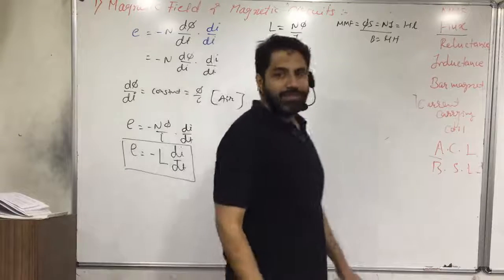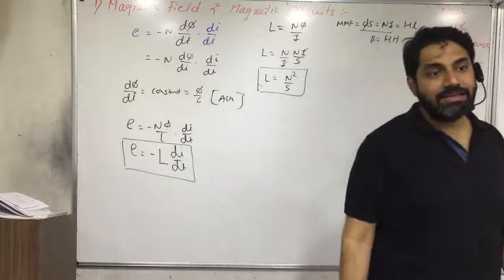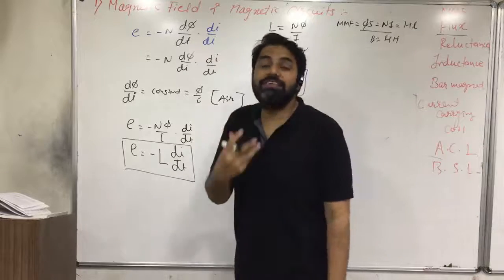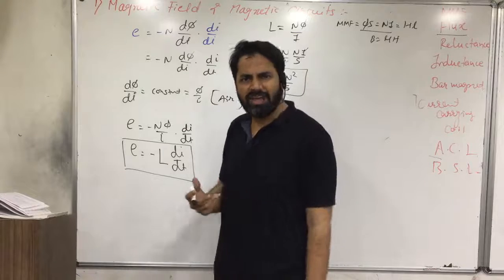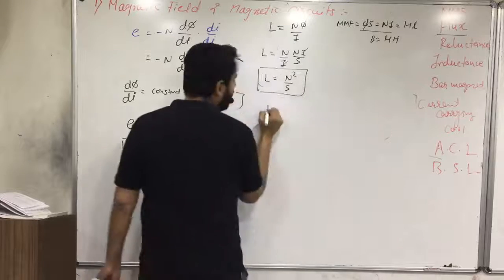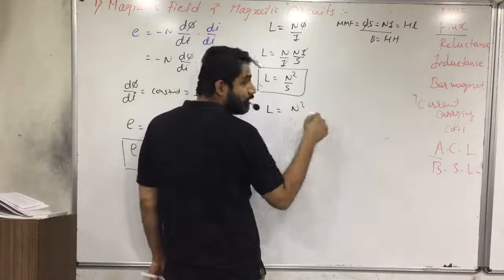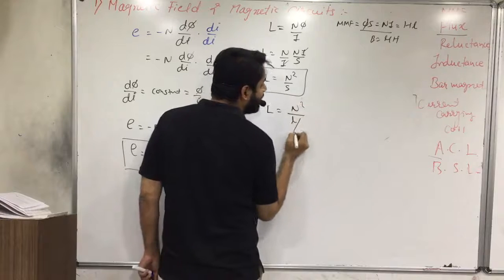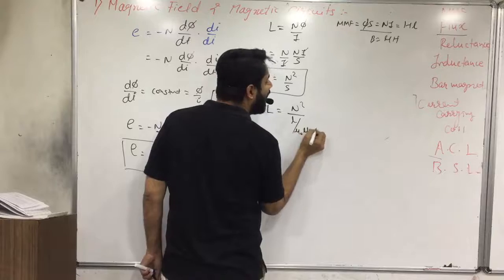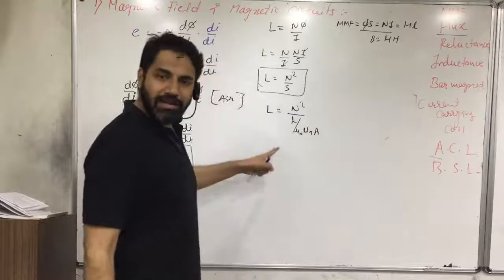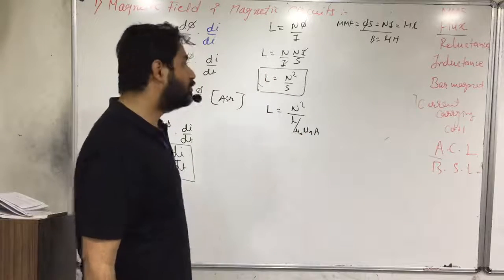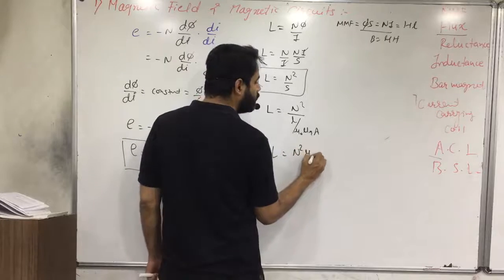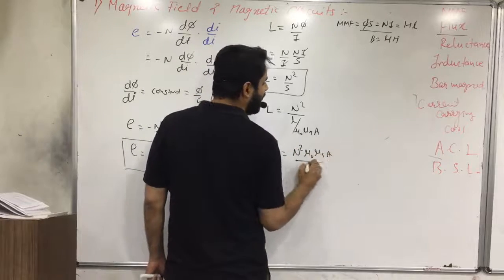So we have got L = N²/S in terms of physical parameters. Since S = l/(μ₀μᵣA), the formula for self inductance becomes L = N²μ₀μᵣA / l, where N is the number of turns, μ₀ and μᵣ are the permeabilities, A is the cross-sectional area, and l is the length.